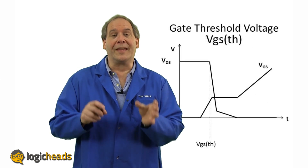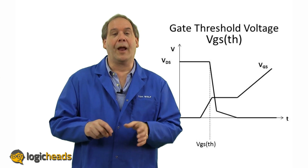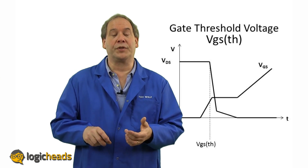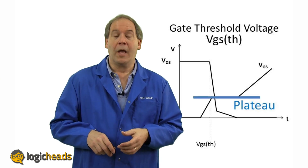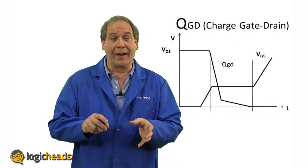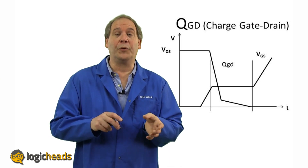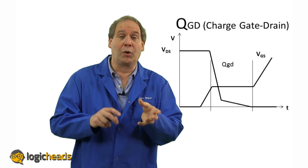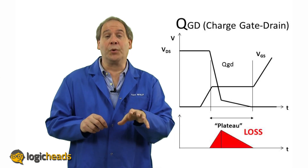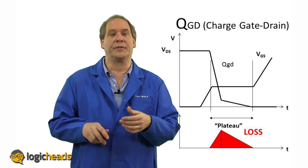To turn on a FET, the gate voltage must first reach a certain level known as VGS threshold. This varies from less than a volt to a couple of volts. It occurs on a point of the voltage curve which we call the plateau. And just like a mechanical switch, it can't close its signal path in zero time. At this plateau, the control voltage must overcome the charge, or the QGD, across the gate and drain before it can allow the signal to pass. This results in a short but measurable delay to turn on the device, and while in this mode, the device dissipates some current which results in loss.